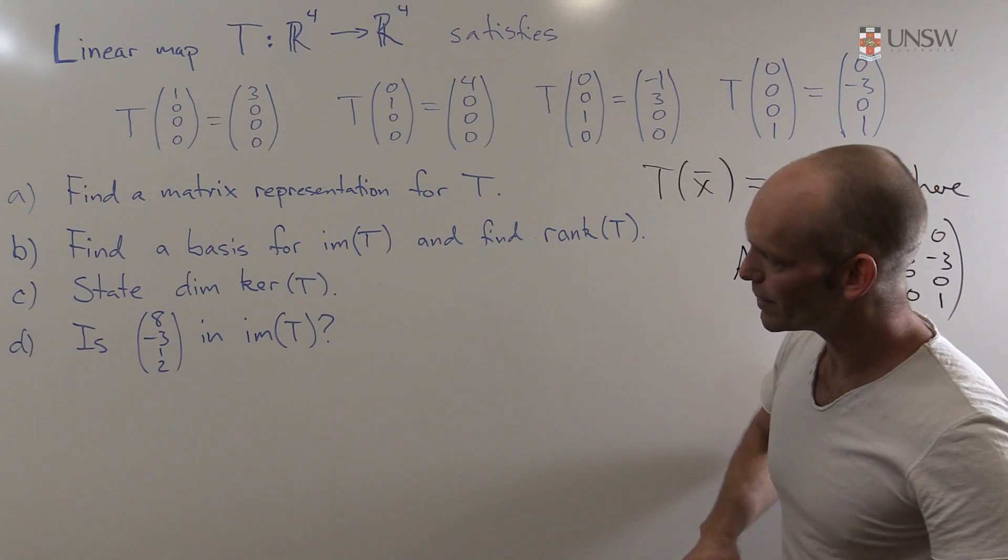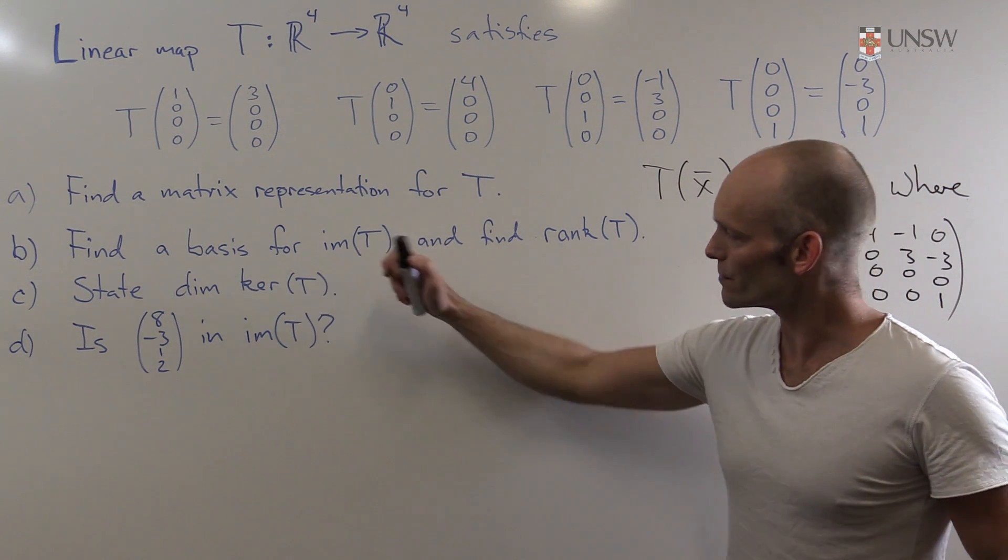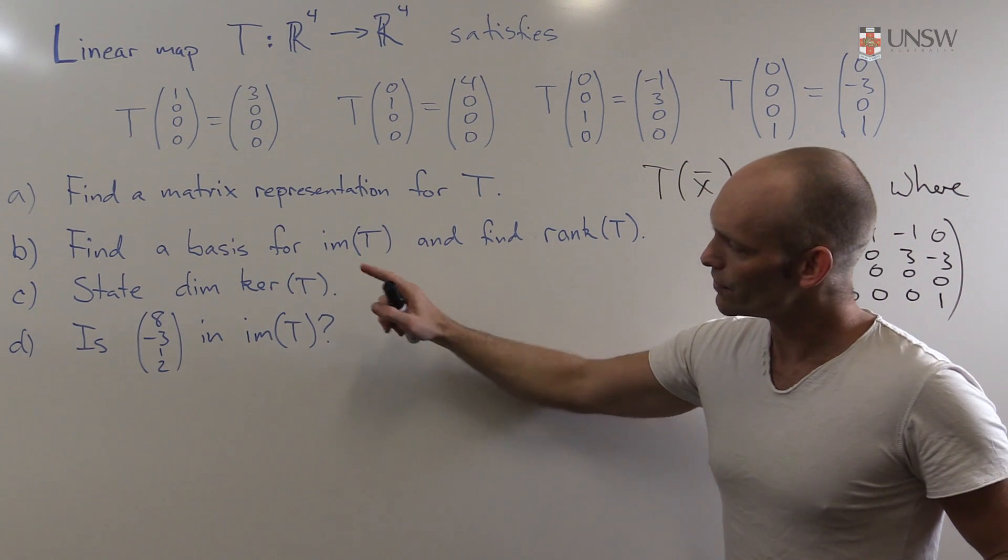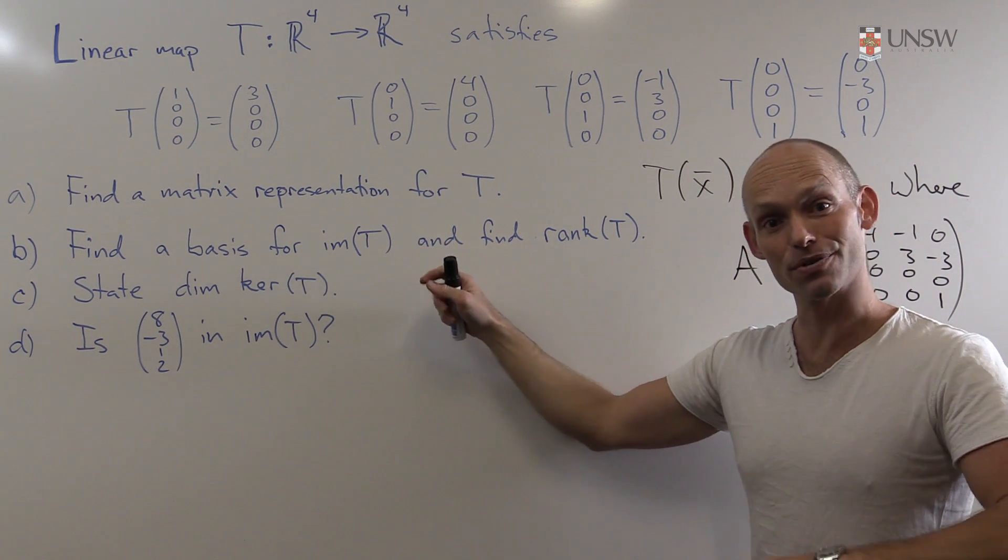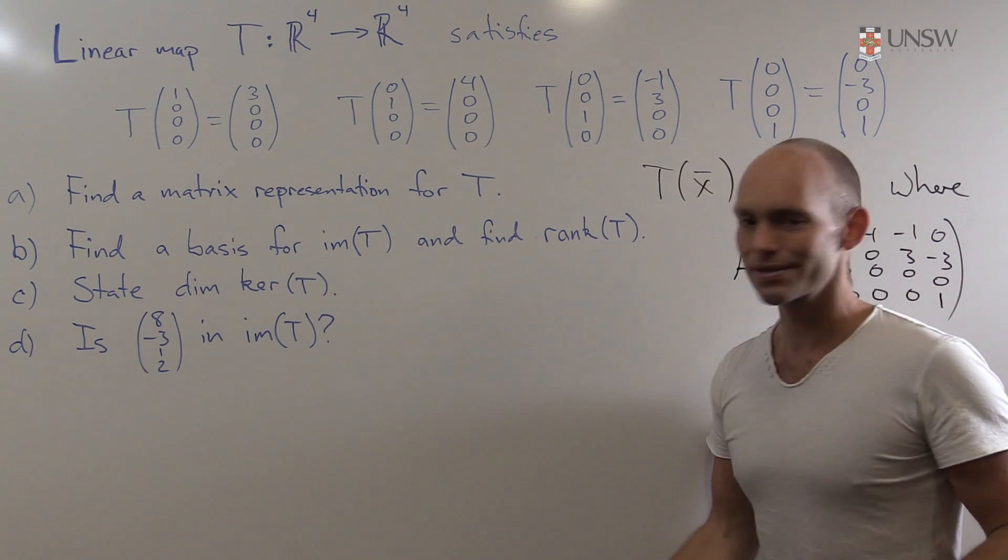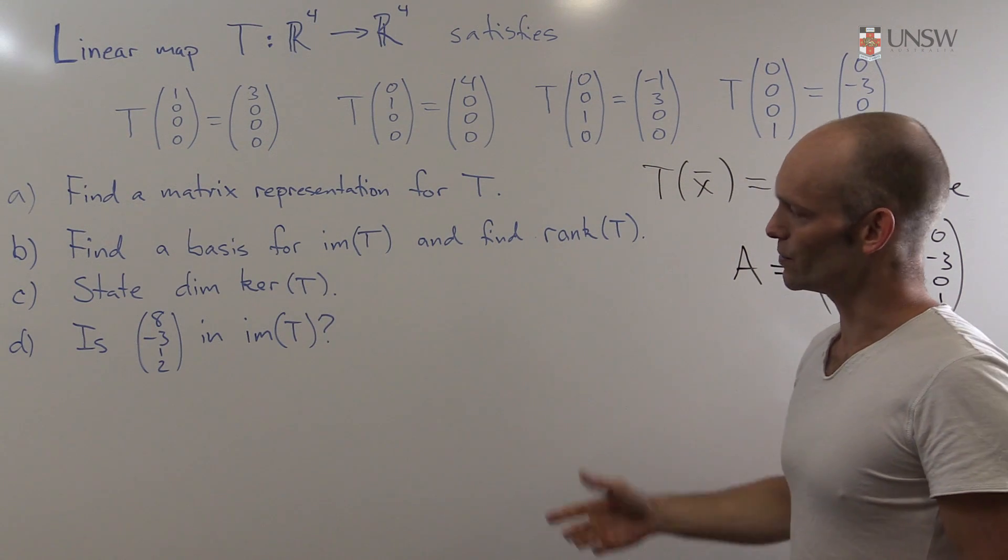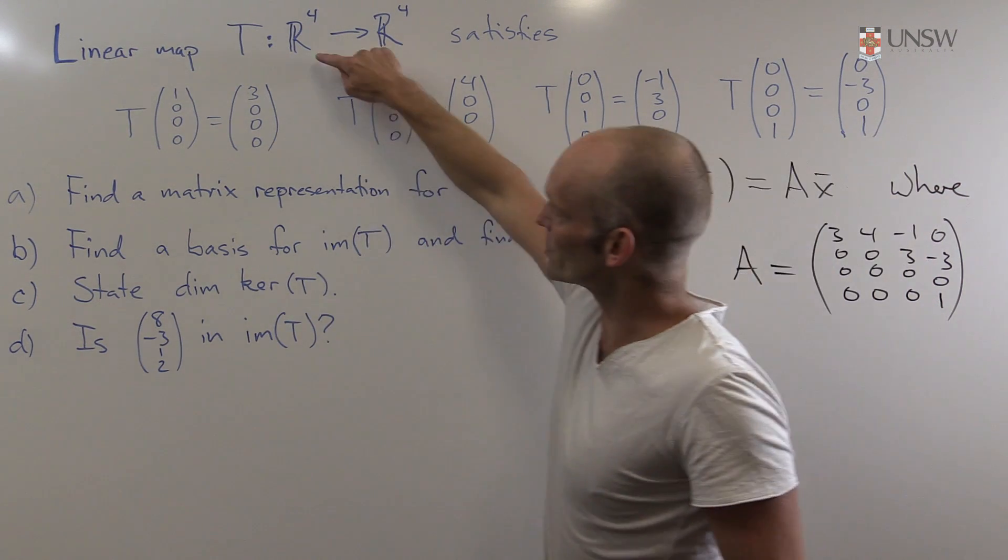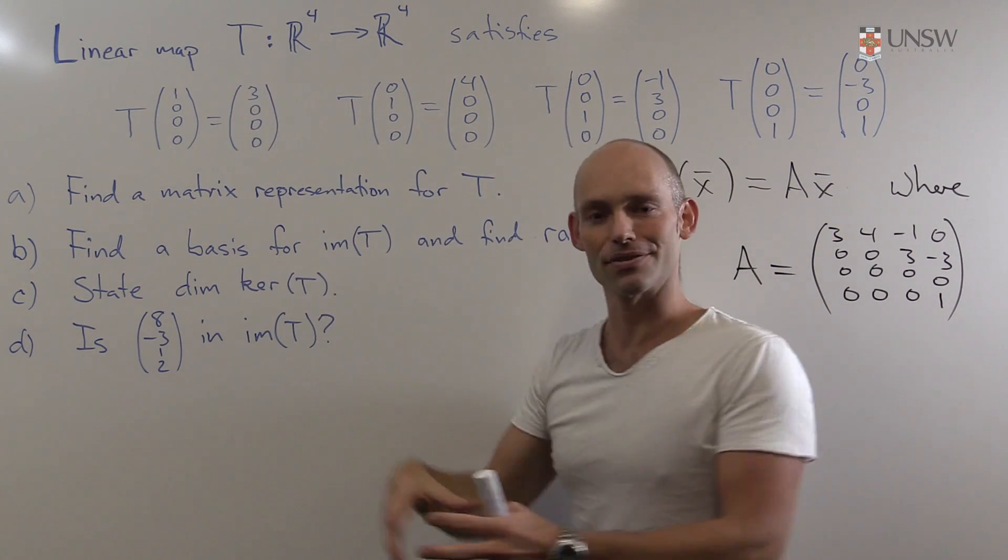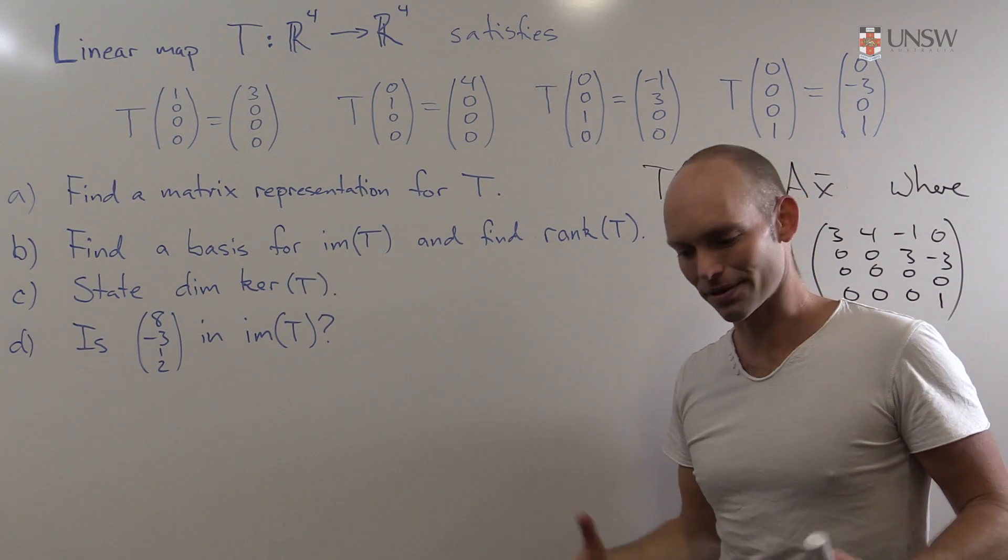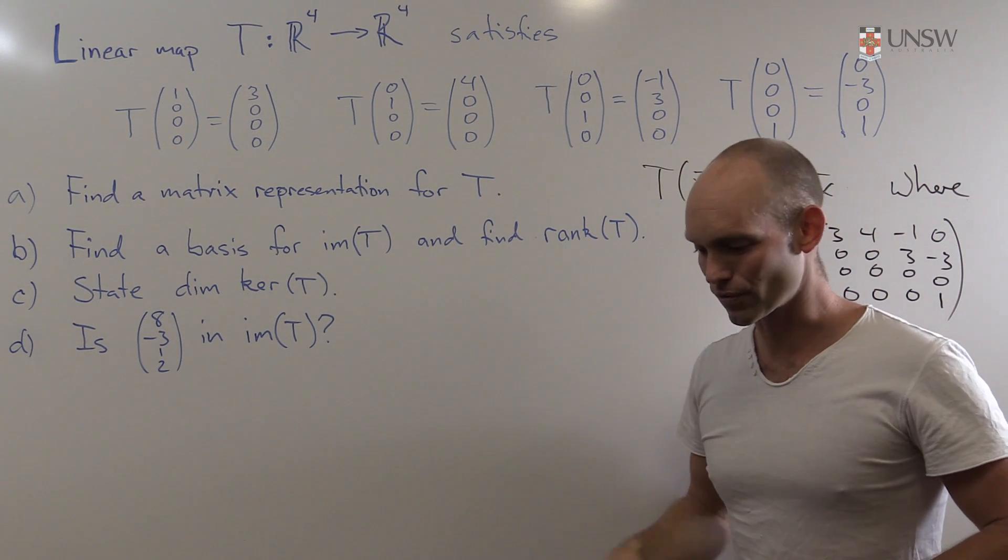Okay, next question, part B. Find a basis for the image of T, and then find the rank of T. But let's look at this first. So we have to find a basis for, well, a vector space presumably, and that vector space here is the image of T. So what is that? Well, it's as it says, it's all the vectors that we get by putting all the vectors in R^4 into T, and seeing what we get. That'll give us a set of vectors, in fact it'll give us the image of T, and it turns out that that's a vector space, and so forth.